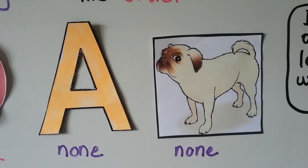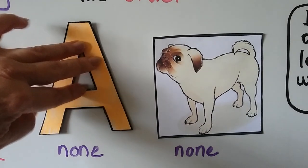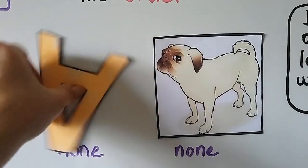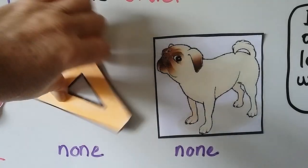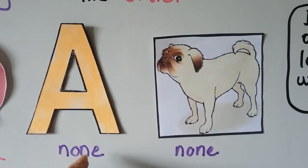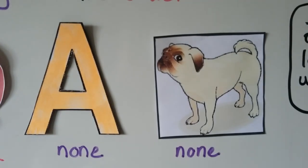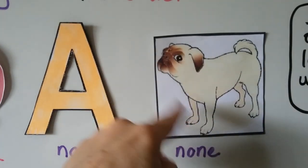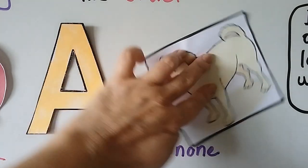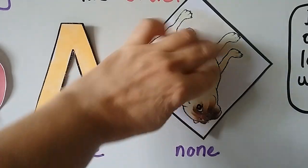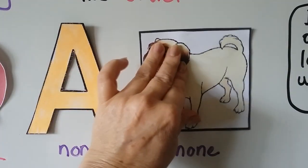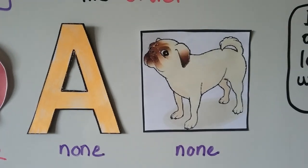For this letter A, how far will I have to turn it before it'll have the same orientation? That's 360 degrees, so that's none. Even this pug — there are no lines of symmetry here. I would have to flip him around completely 360 degrees to have the same orientation, so that's none.